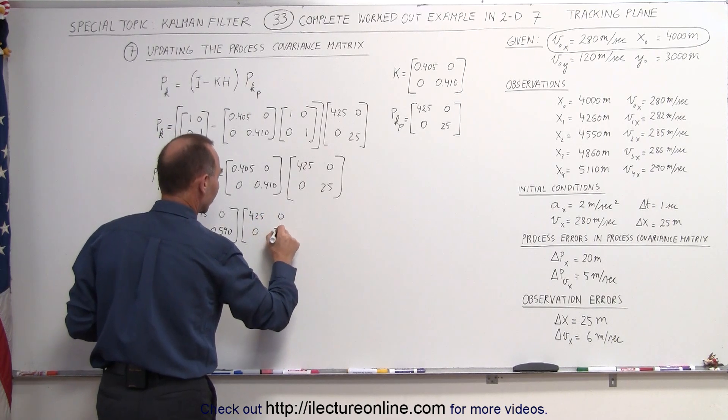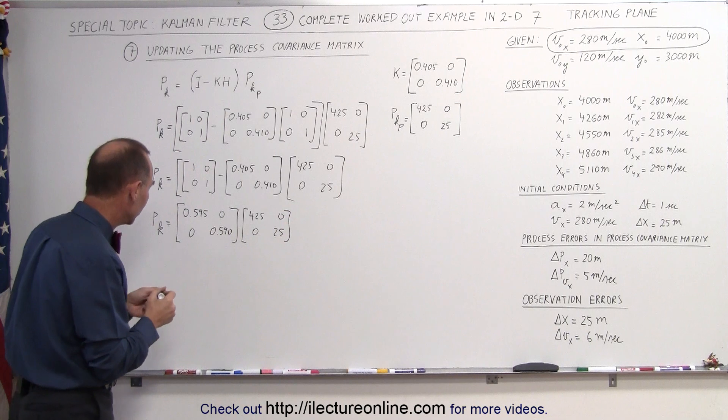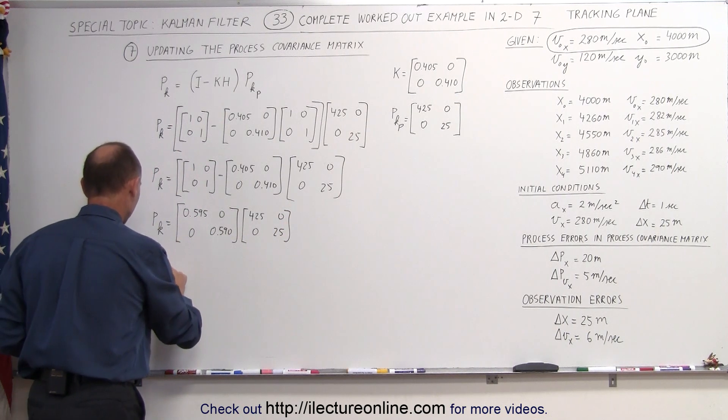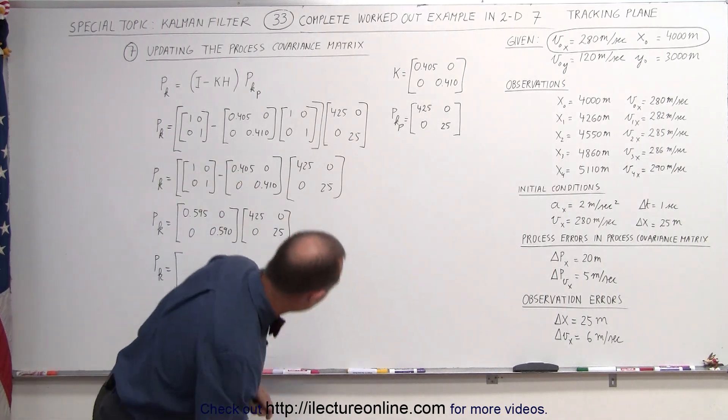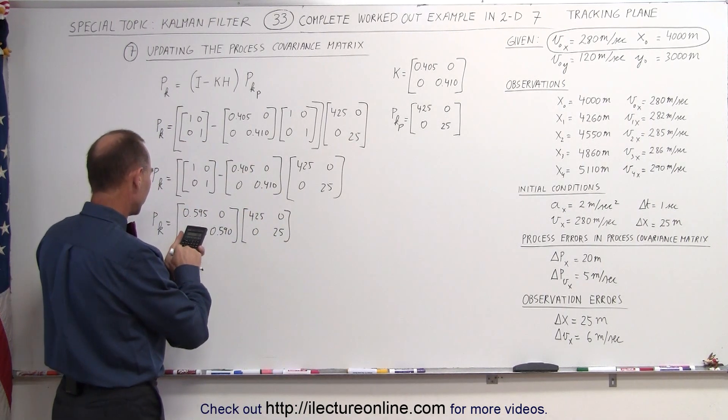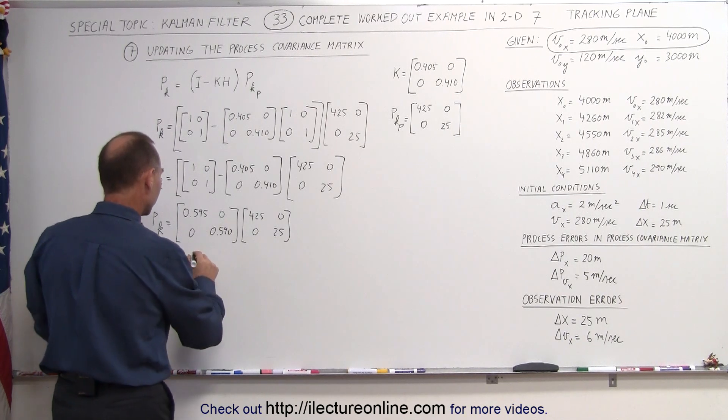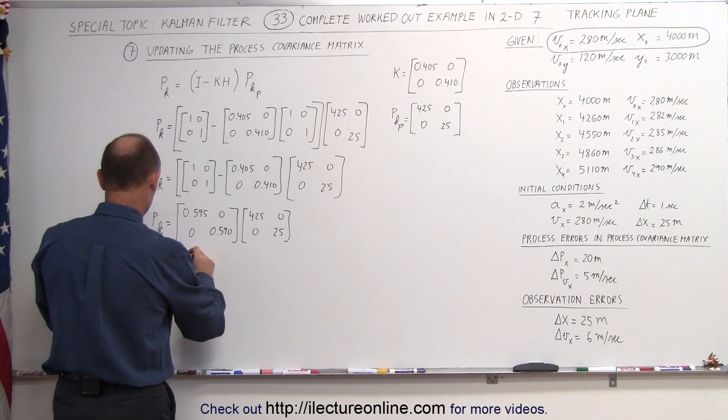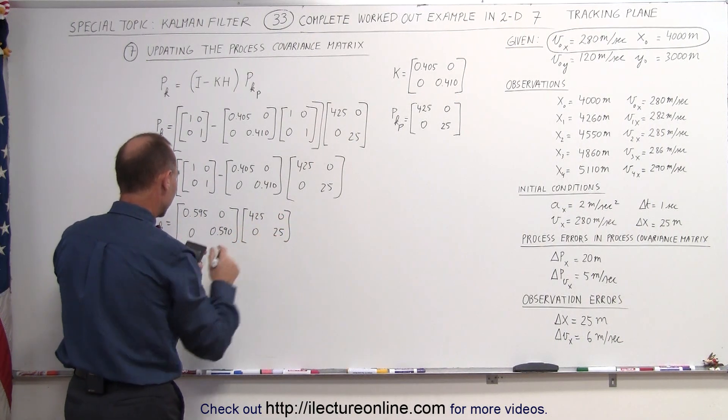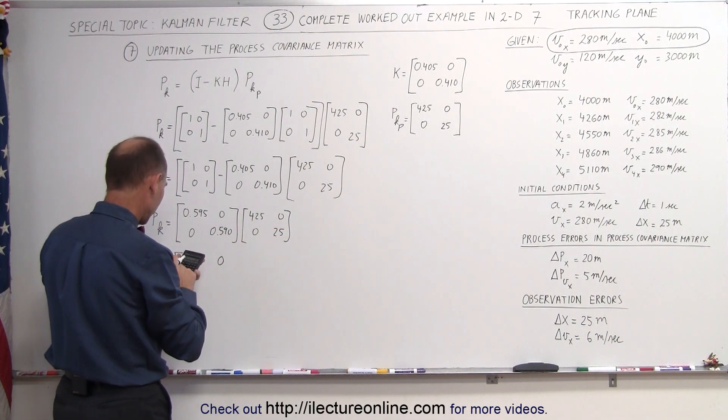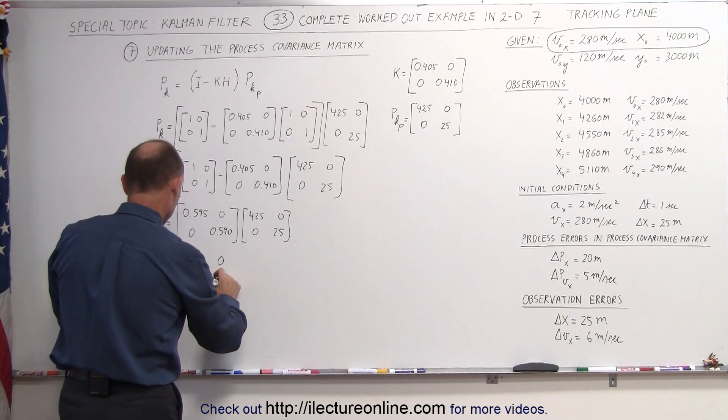Or process covariance matrix, we should call it. Now we're ready to do that multiplication. P sub K is equal to, multiply this times this, for that I'm going to need a calculator. So we have 425 times 0.595 equals, here we get 0, there we get 0, and here we get 25 times 0.59 equals, that would be, I'll just round it off to 14.8.